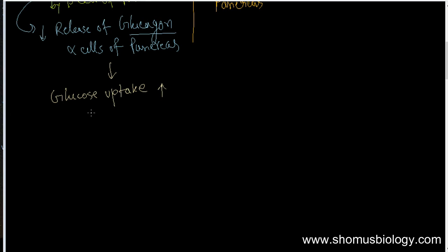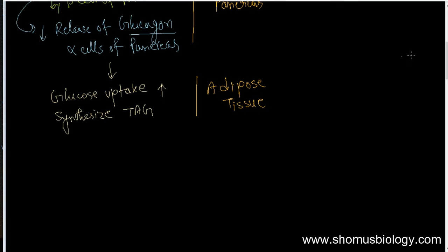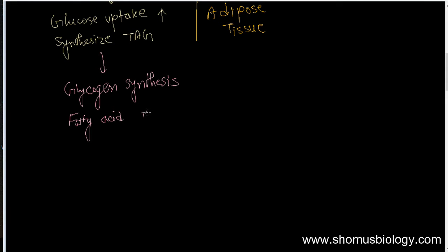It also starts to synthesize triacylglycerols, and this process takes place in the adipose tissue, which is a specific tissue designed to store fat as triacylglycerols. So triacylglycerol production is increased and glucose uptake is also increased. This leads to glycogen synthesis, as well as fatty acid synthesis and triacylglycerol synthesis.